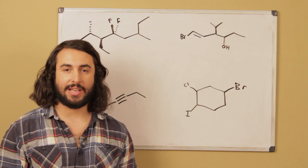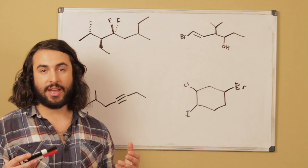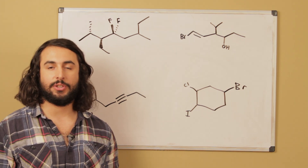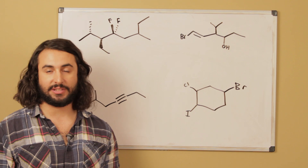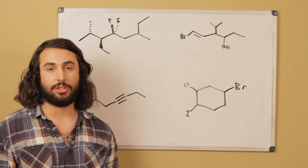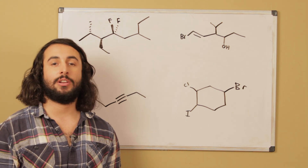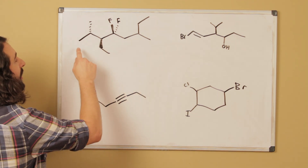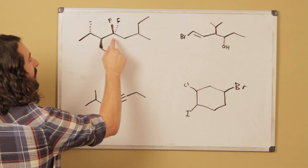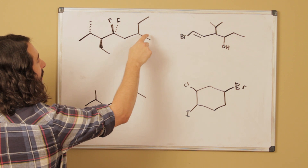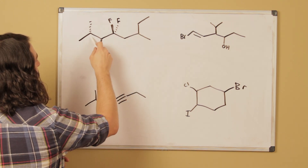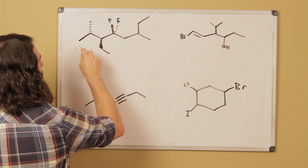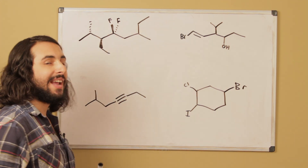Let's name these one at a time. Remember that when we're generating an IUPAC name for a compound, we have to do a couple of things. The first thing we have to do is identify the parent chain. The parent chain is always going to be the longest carbon chain in the molecule, so you have to be careful — we have a tendency to just pick one, but actually it's going to be longer if we extend it further.